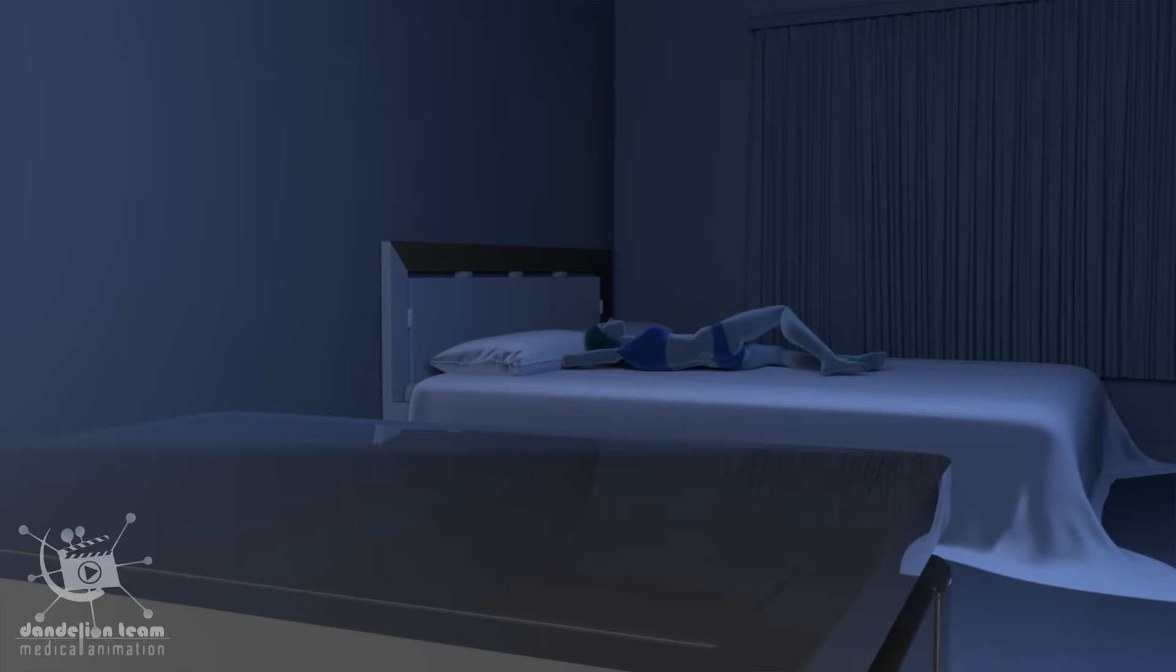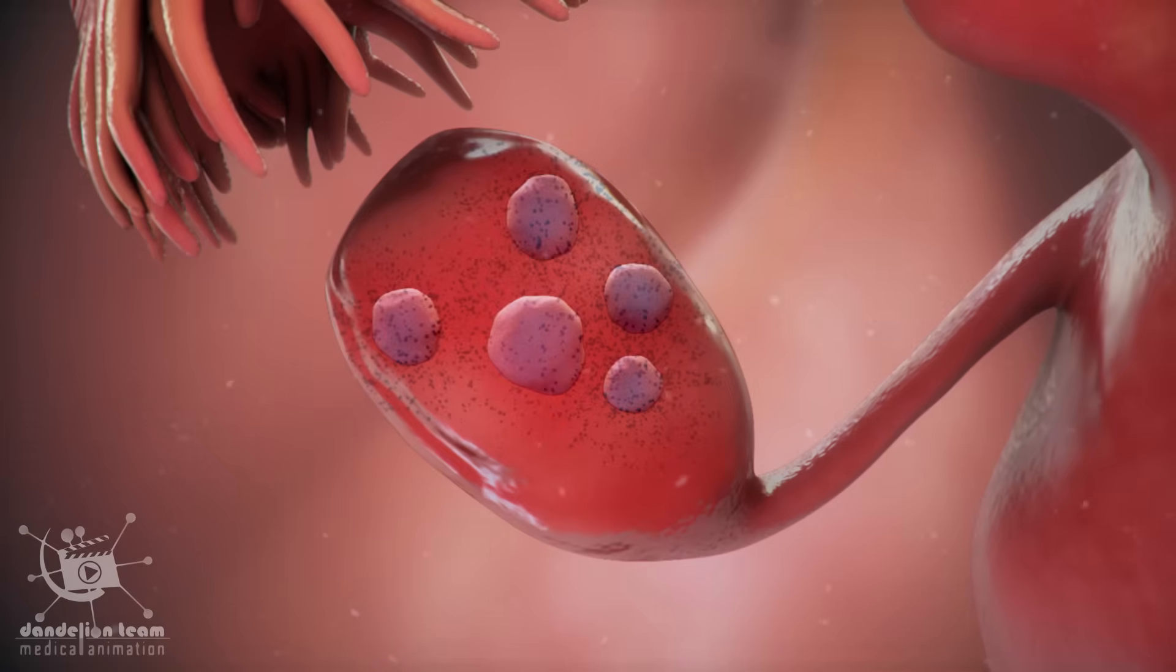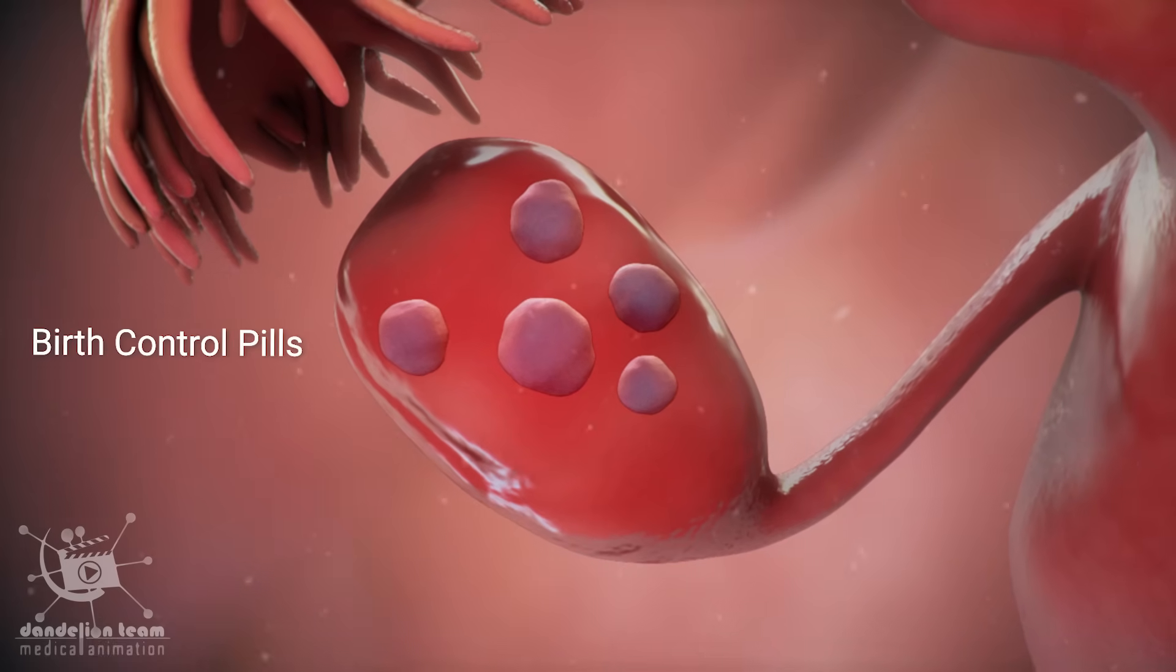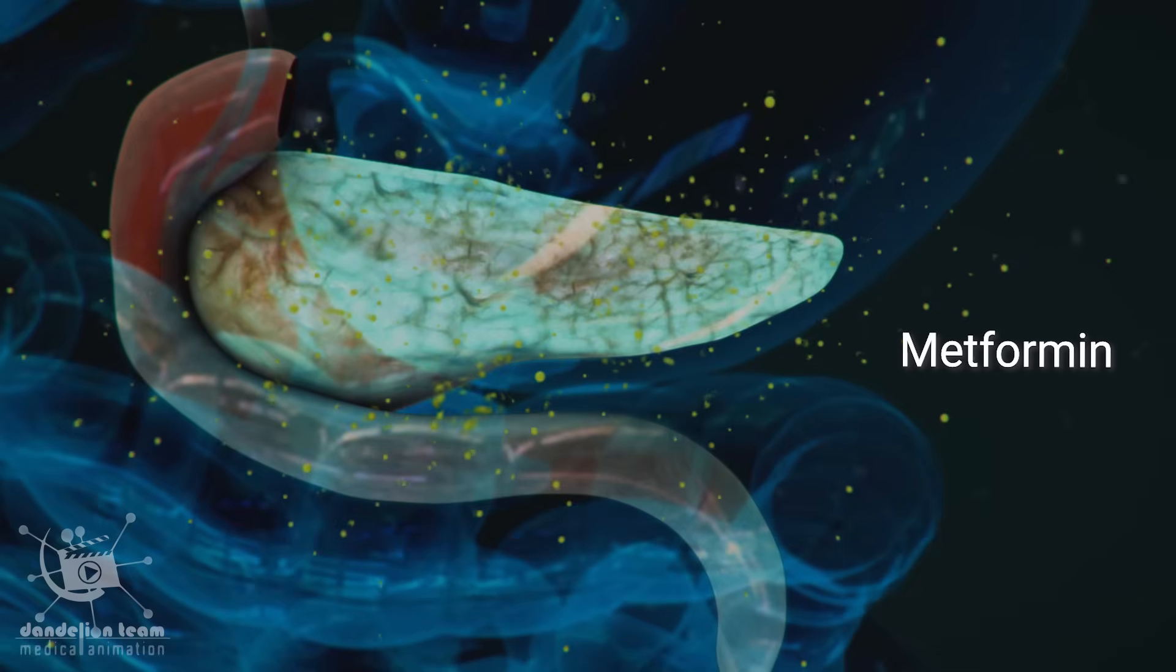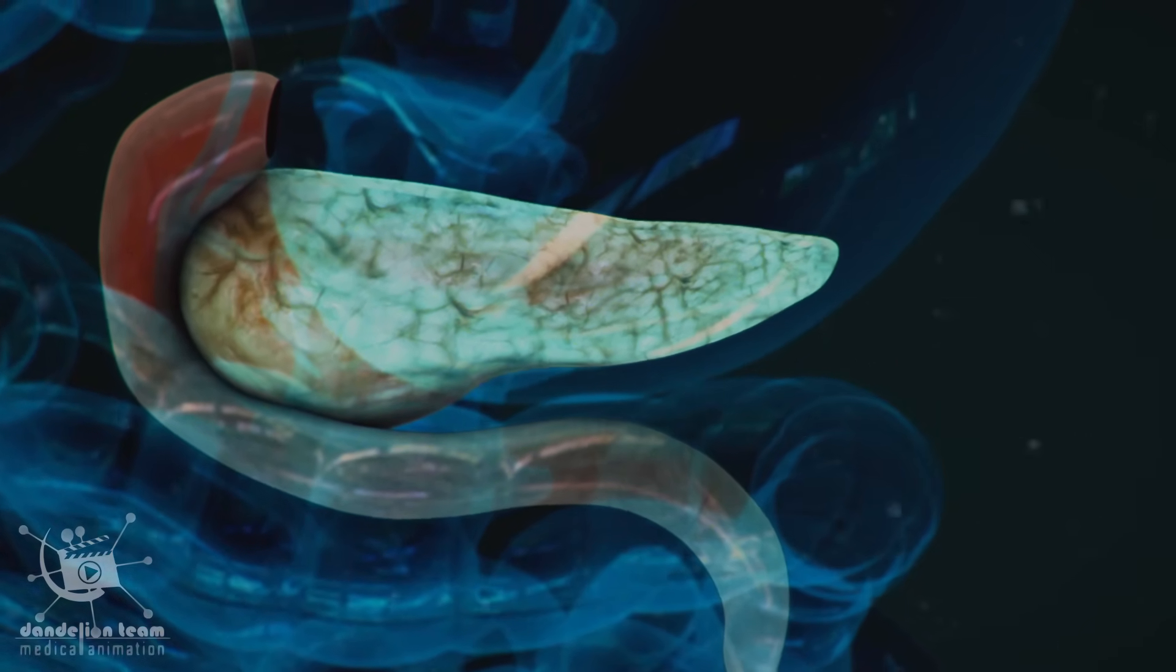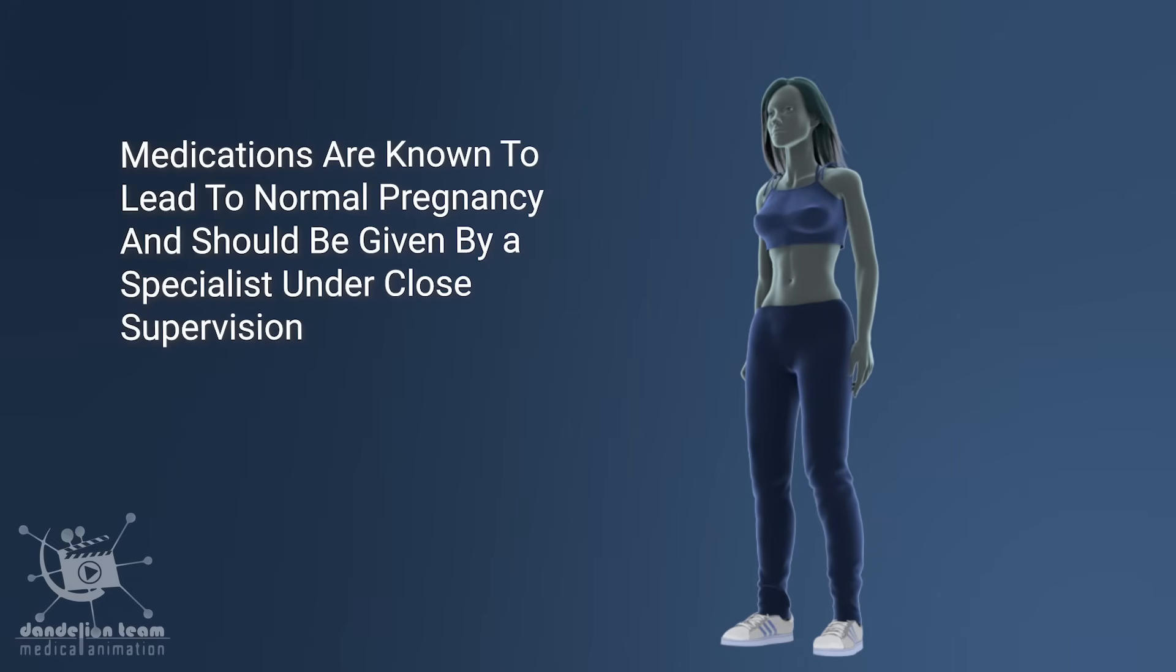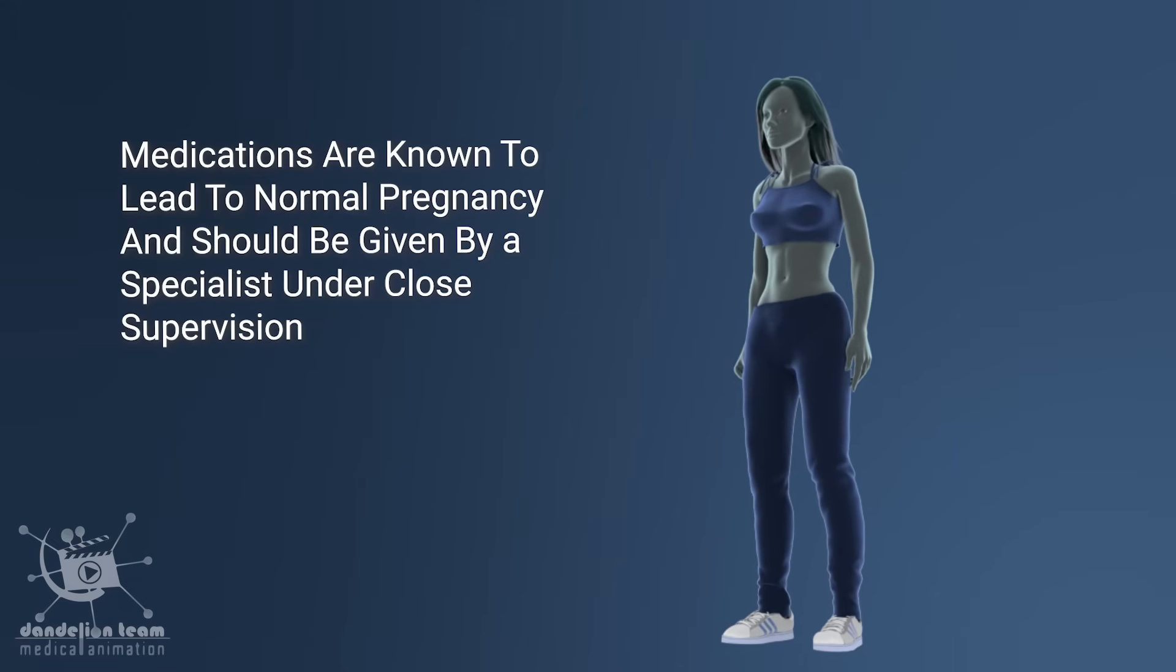There are also medical treatments available for polycystic ovary symptoms. Birth control pills cause regular periods and will also help lower testosterone levels. A medication called metformin helps lower insulin levels and improve insulin sensitivity. Spironolactone is available to help with excess hair growth. Medications are known to lead to normal pregnancy and should be given by a specialist under close supervision.